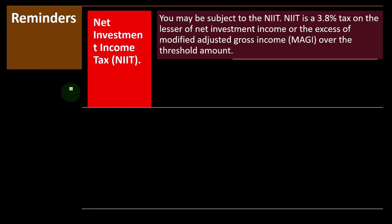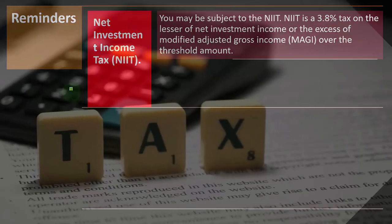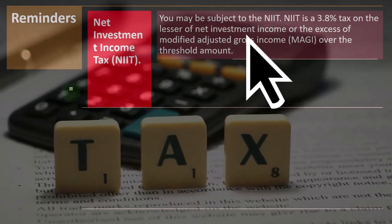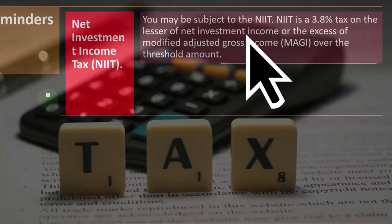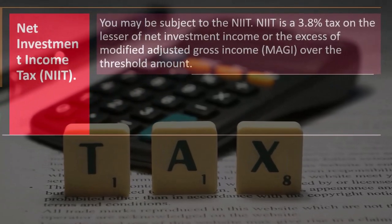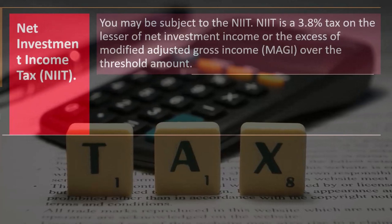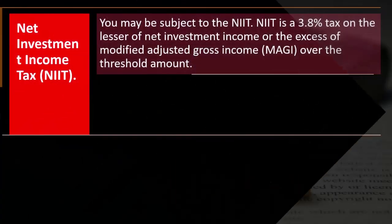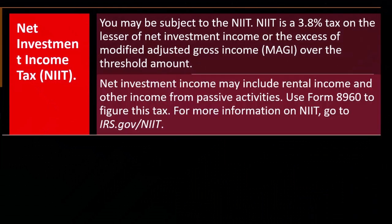Reminders: net investment income tax, the NIIT. You may be subject to the NIIT. NIIT is a 3.8% tax on the lesser of net investment income or the excess of modified adjusted gross income, MAGI — basically your AGI, your adjusted gross income with some slight modifications — over the threshold amount. Net investment income may include rental income and other income from passive activities.